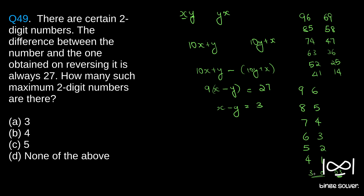The combination 3 and 0 won't satisfy this condition, since on reversing we get 03, which is not a two-digit number. So that combination cannot be used. These are all the valid combinations.